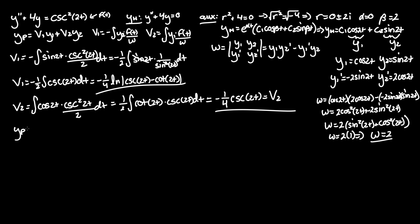Now we have everything we need to plug into our y particular solution. v1 y1 becomes negative one fourth ln cosecant of 2t minus cotangent of 2t, y1, which is cosine of 2t, plus v2, negative one fourth cosecant of 2t, times y2, which is sine of 2t.